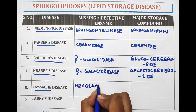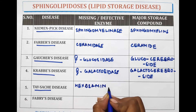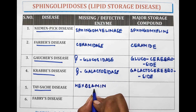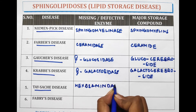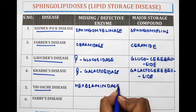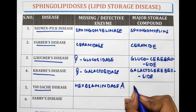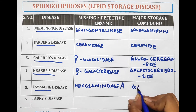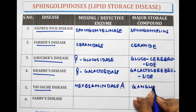The next disease involves a defect in the enzyme Hexosaminidase A subtype, and the storage compound is Ganglioside GM2. This corresponds to Tay-Sachs disease.